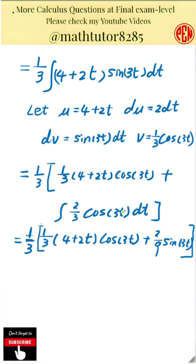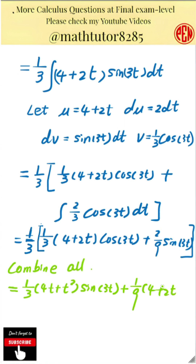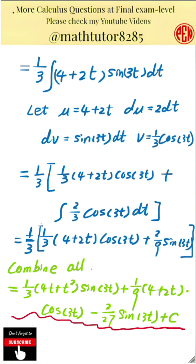The next step is to assemble the final answer. We substitute everything back into our original expression. We had the first term: 1 third times 4t plus t squared times sine of 3t. Now subtracting the second result, which includes two terms: negative 1 third times the expression 4 plus 2t times cosine of 3t, and plus 2 over 9 times sine of 3t. Because of the negative sign in front of the integral, we get: 1 third times 4t plus t squared times sine of 3t, plus 1 over 9 times the expression 4 plus 2t times cosine of 3t, minus 2 over 27 times sine of 3t.